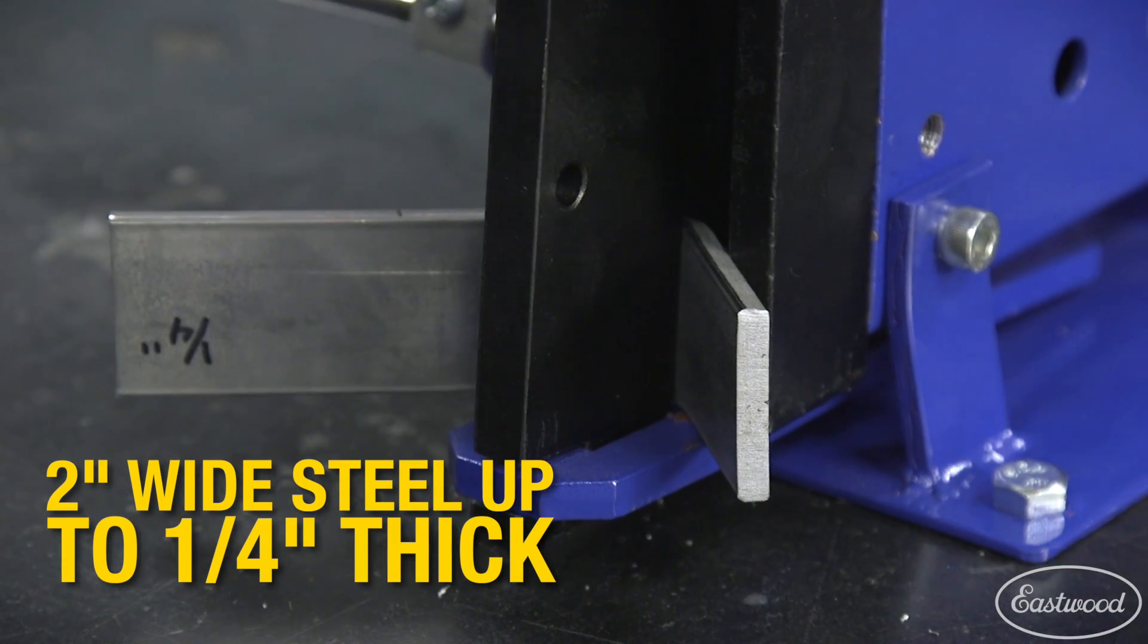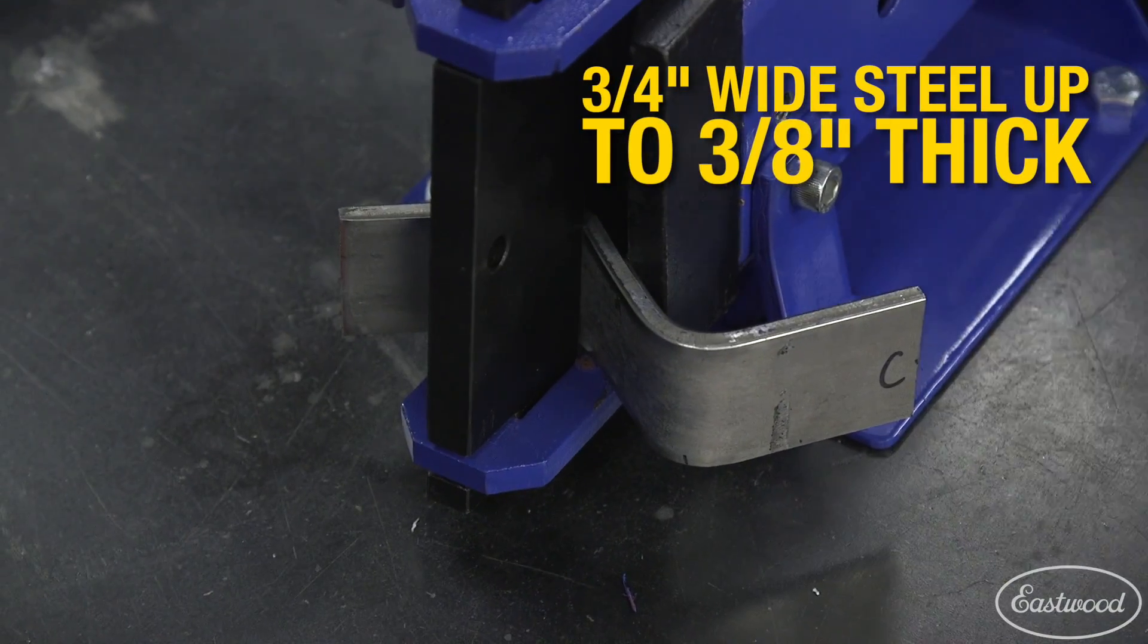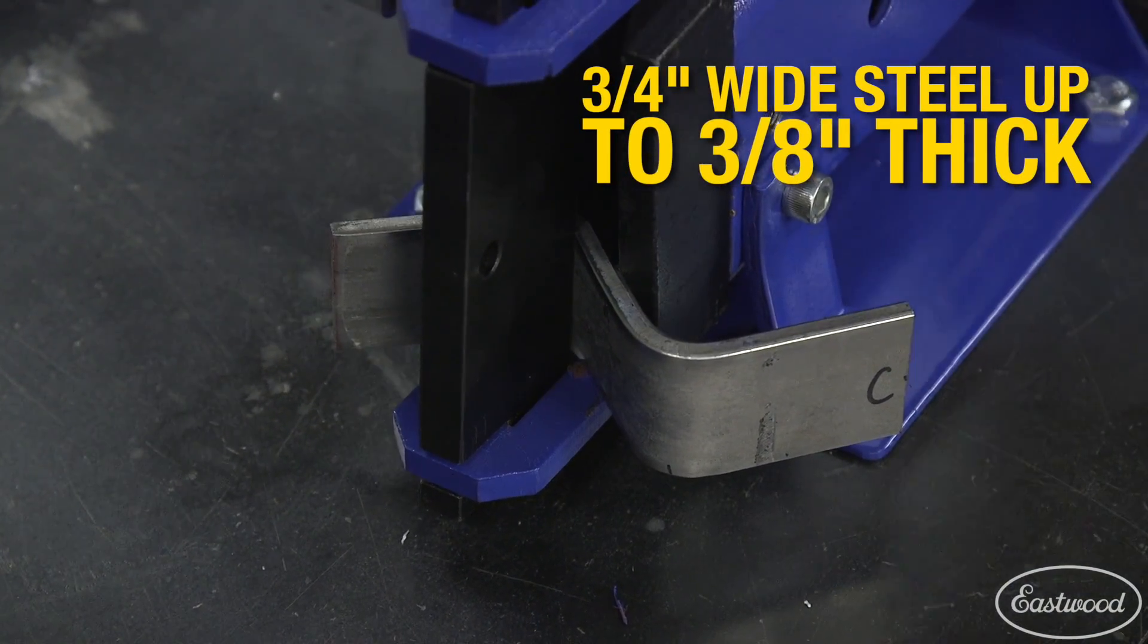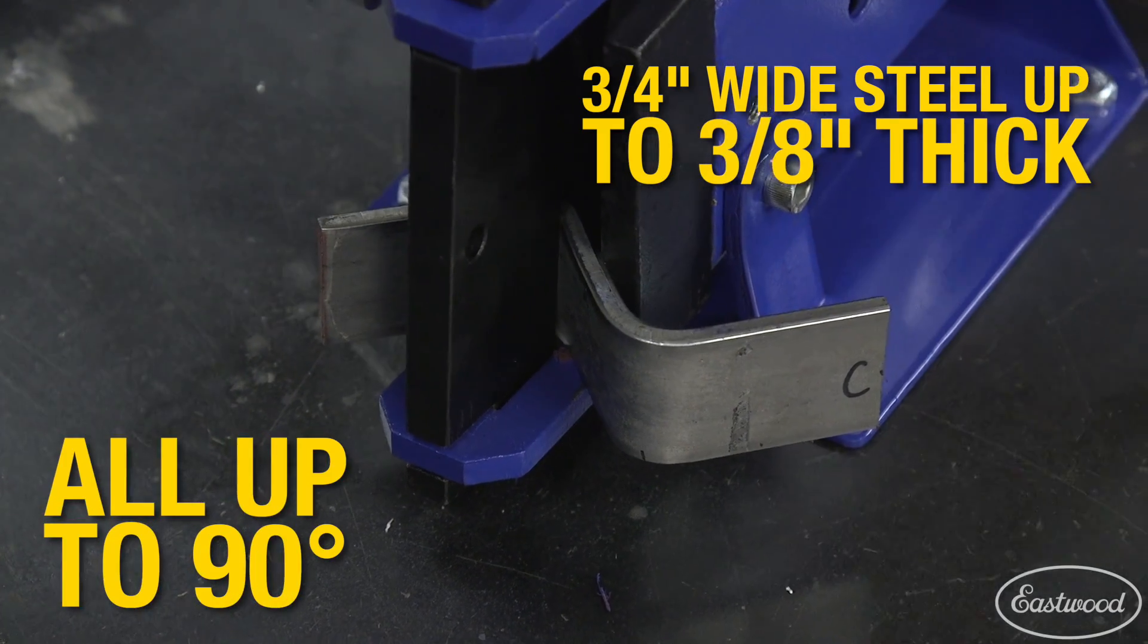It will also bend 2-inch wide steel that is 1/4 inch thick and 3/4 inch wide steel that is a full 3/8 inch thick, all up to a 90 degree angle.